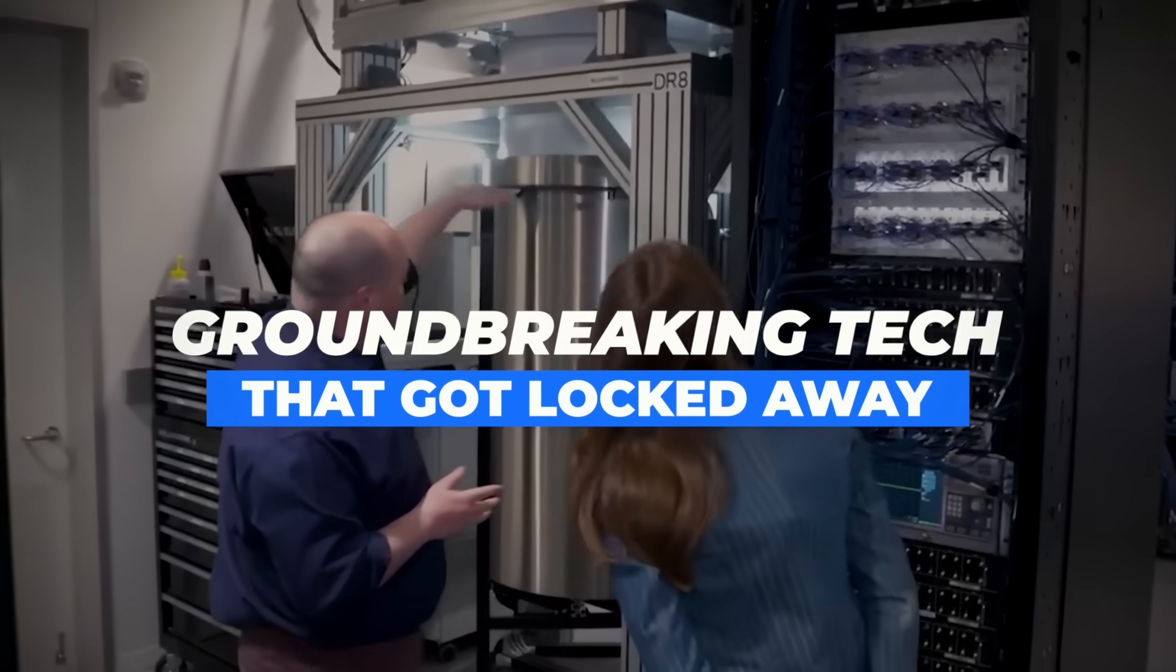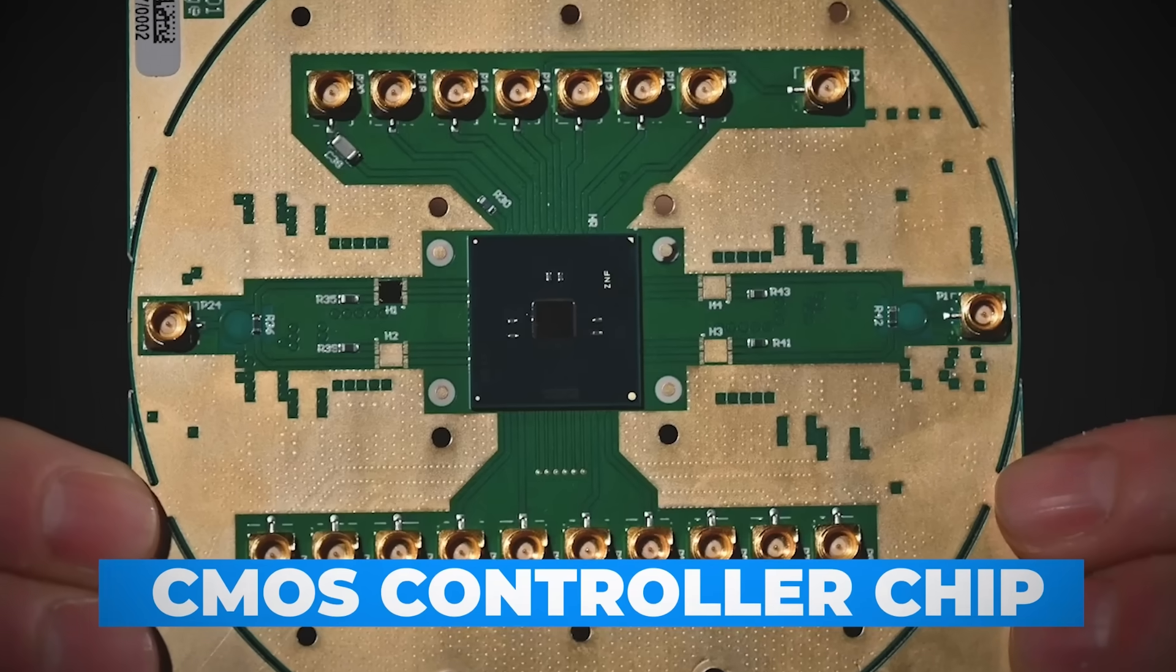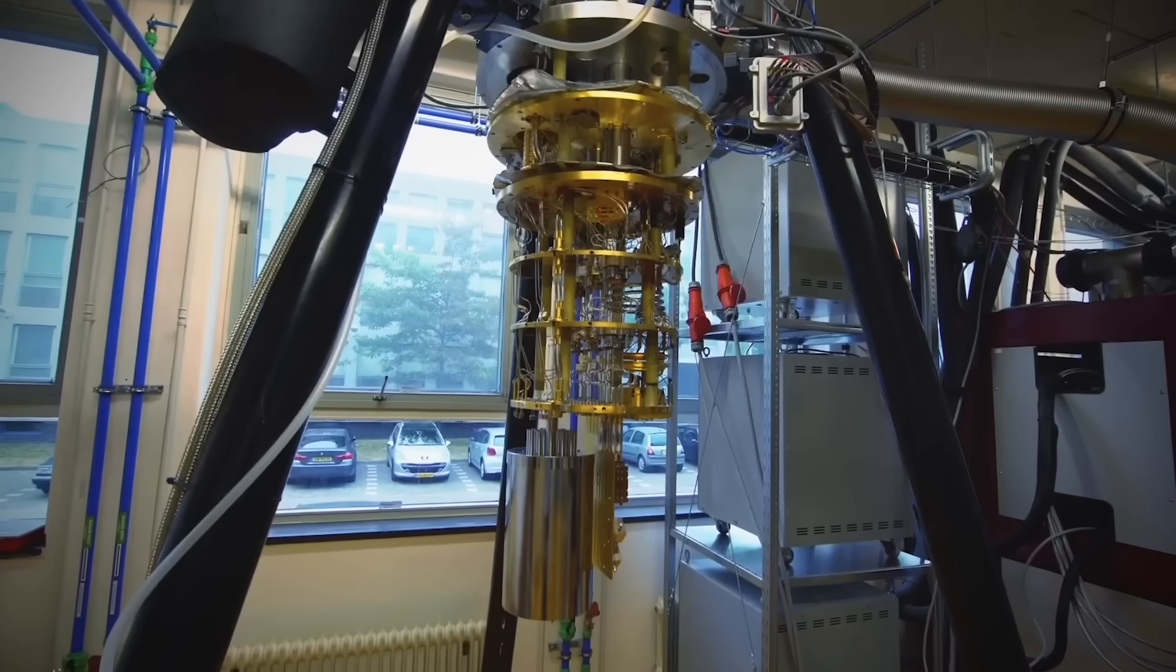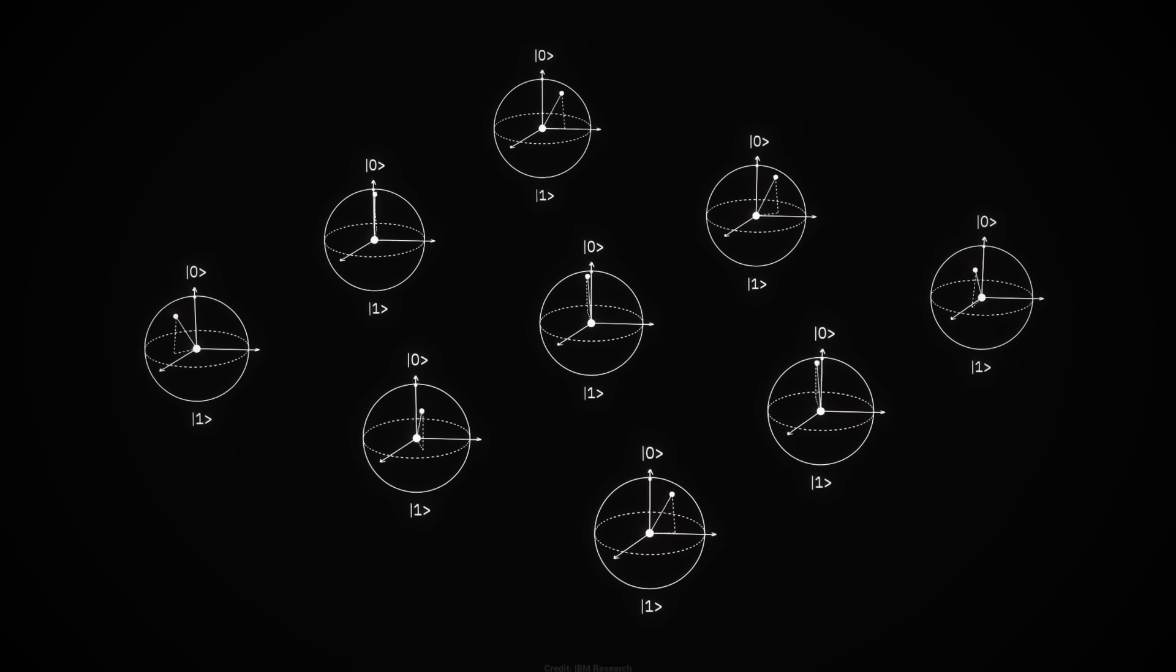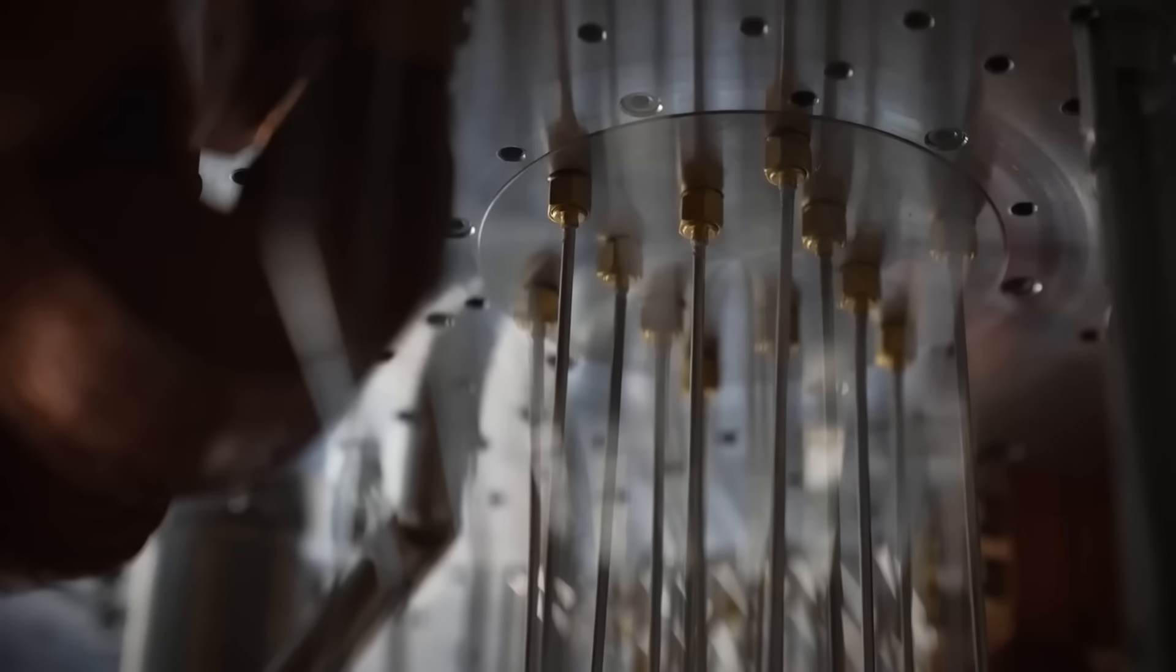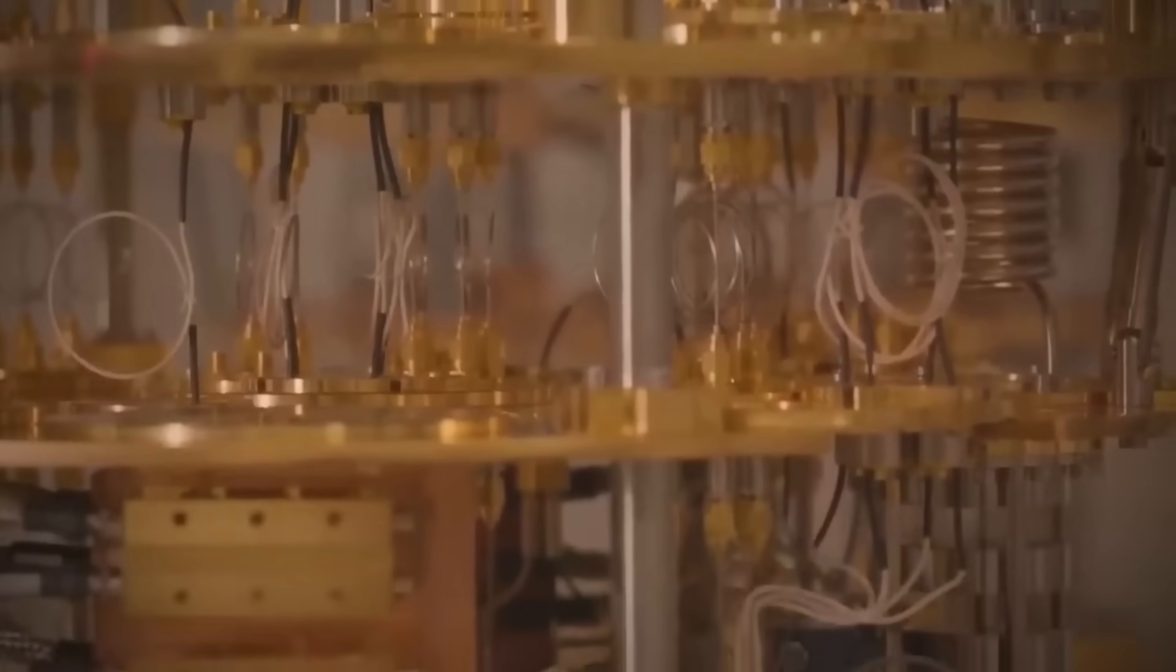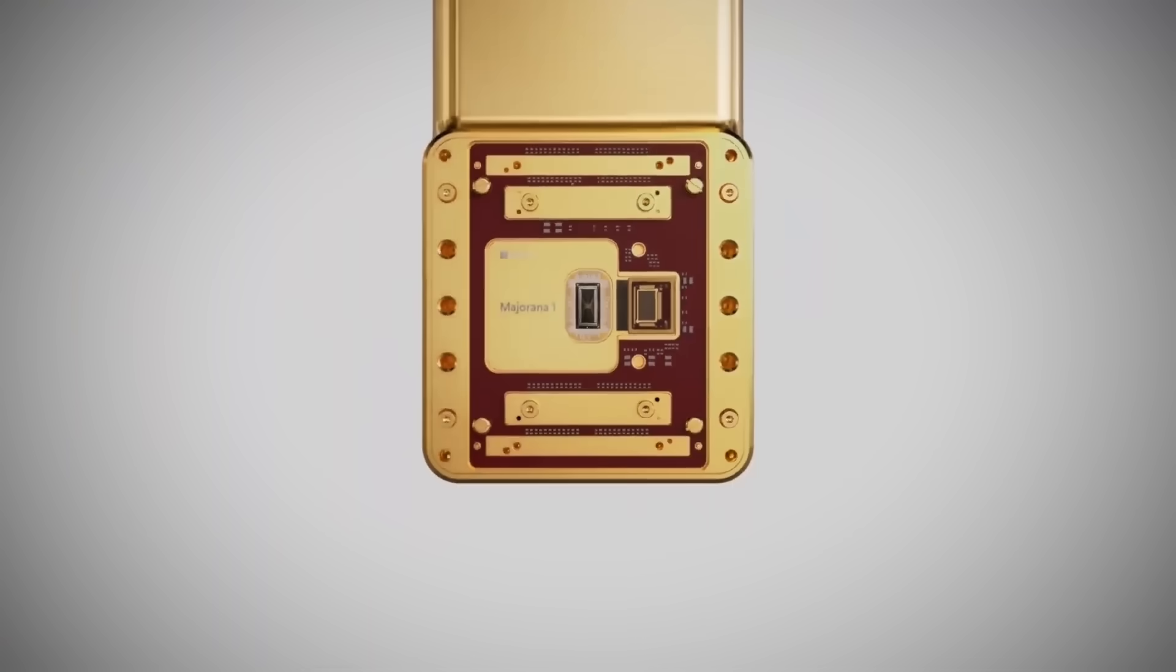Groundbreaking tech that got locked away. What exactly was this Sydney team developing that made Microsoft so desperate to keep them? A revolutionary cryogenic CMOS controller chip that changes everything about quantum computing. This chip does something no other quantum technology can do. It operates directly inside the dilution refrigerator, right next to the qubits at near absolute zero temperatures. If you know anything about quantum computing, you understand this solves the biggest roadblock to practical quantum computers. No more wiring problem with thousands of cables running in and out of the freezer. No more heat contamination destroying quantum states. Just pure, direct control of potentially millions of qubits from inside the quantum environment itself.